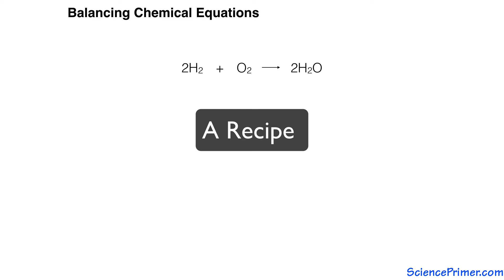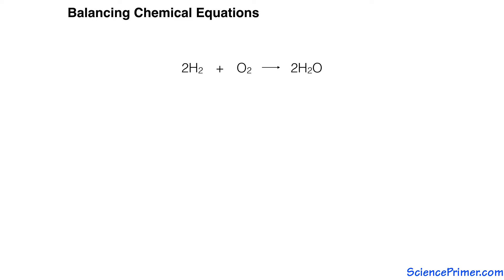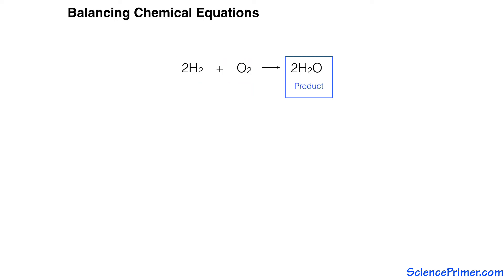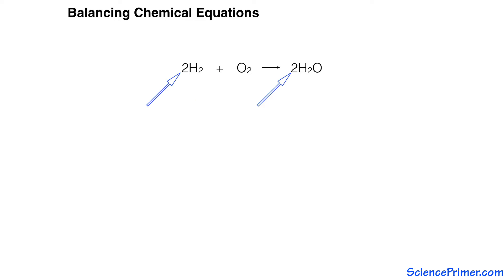A chemical equation can be thought of as a recipe for making a set of chemical compounds using other compounds as starting materials. A properly formed chemical equation contains the molecules transformed by the reaction on the left side — these are the reactants. The molecules formed by the reaction on the right side are the products. An arrow separates reactants from products. In reactions with more than one reactant or product, plus signs separate the individual products and reactants from each other. Numbers in front of each compound specify how many moles of each is required to convert all of the reactants to products.